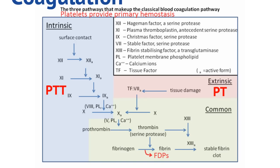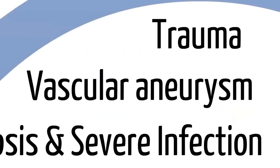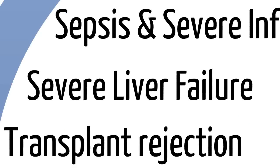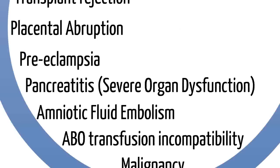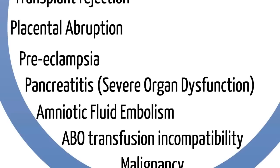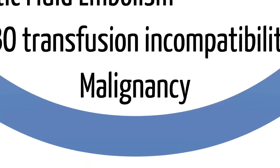Now that we know the basics of coagulation, let's look at the details of DIC. The causes of DIC are wide, and they include trauma, vascular aneurysm, sepsis and severe infection, severe liver failure, transplant rejection, placental abruption, preeclampsia, pancreatitis, other severe organ dysfunction, amniotic fluid embolism, ABO transfusion incompatibility, and last but not least, malignancy. Note that all these disorders have systemic involvement, meaning they affect more than one organ, and that's probably the reason why they're associated with DIC.